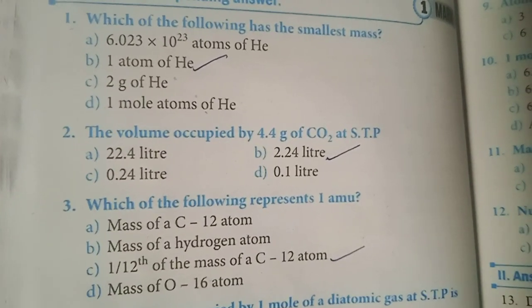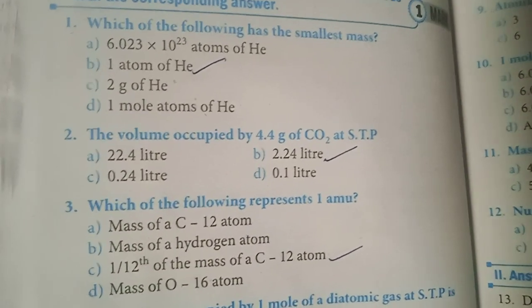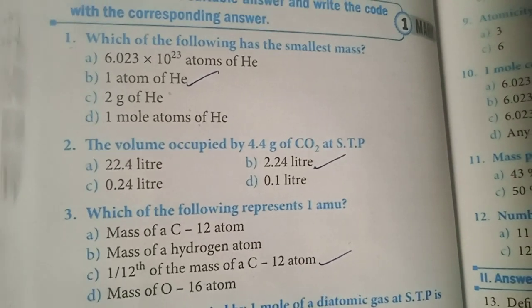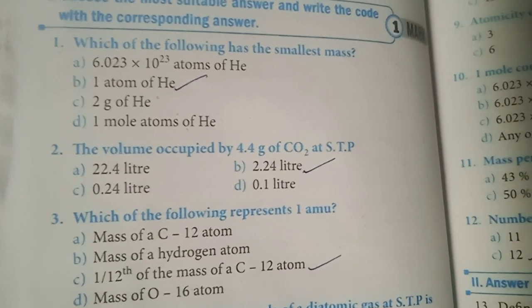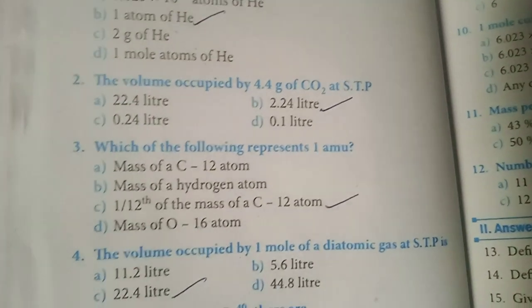Which of the following represents 1 amu? Option C, one-twelfth of the mass of a carbon-12 atom, is the answer.